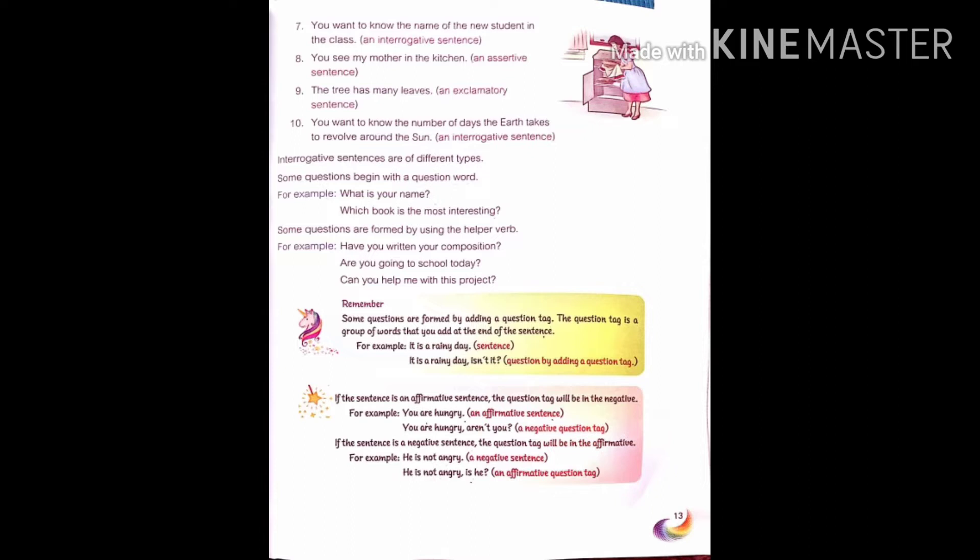Interrogative sentences are of different types. Some questions begin with a question word. For example, 'What is your name?' or 'Which book is the most interesting?' Some questions are formed by using the helper verb. For example, 'Have you written your composition?', 'Are you going to school today?', 'Can you help me with this project?' So, questions are of different types. Sometimes we use WH question words, and sometimes we use helper verbs like have, are, can, is, was.